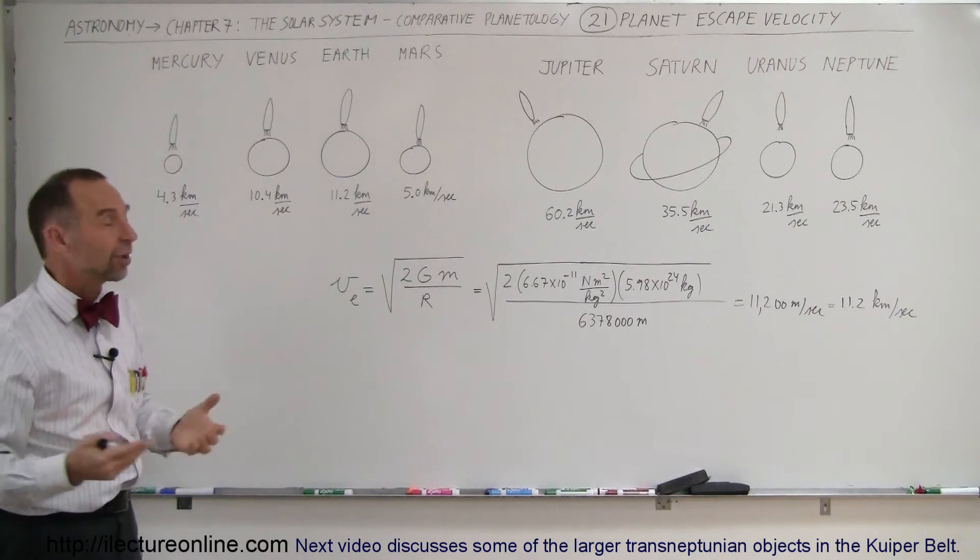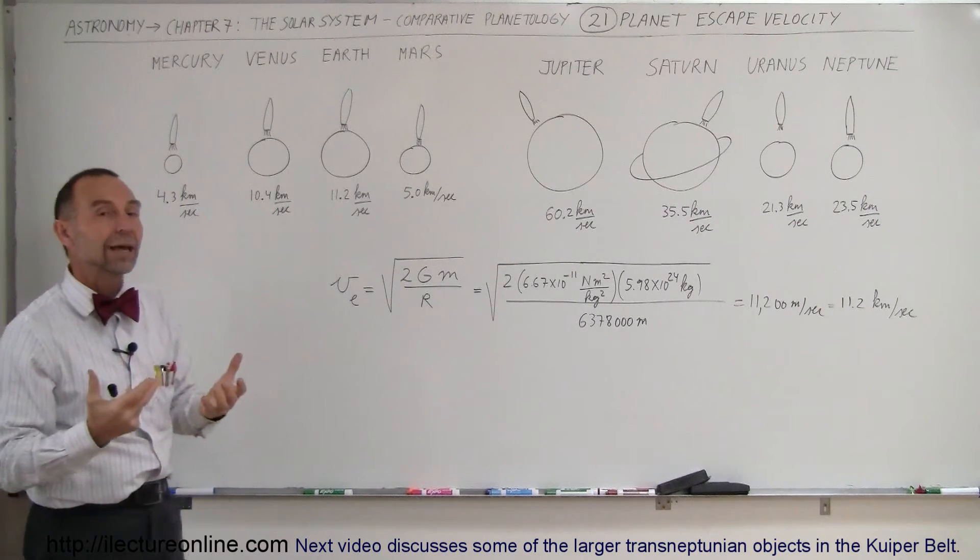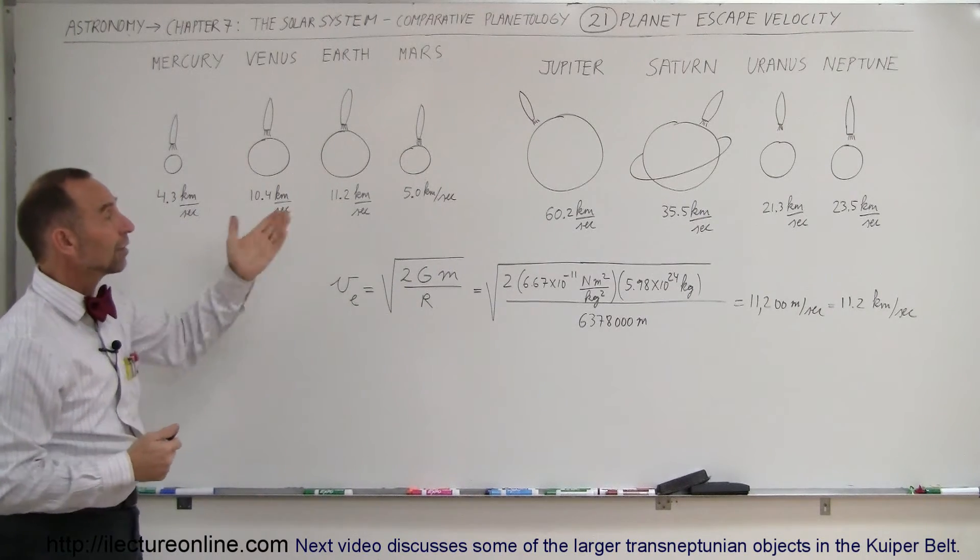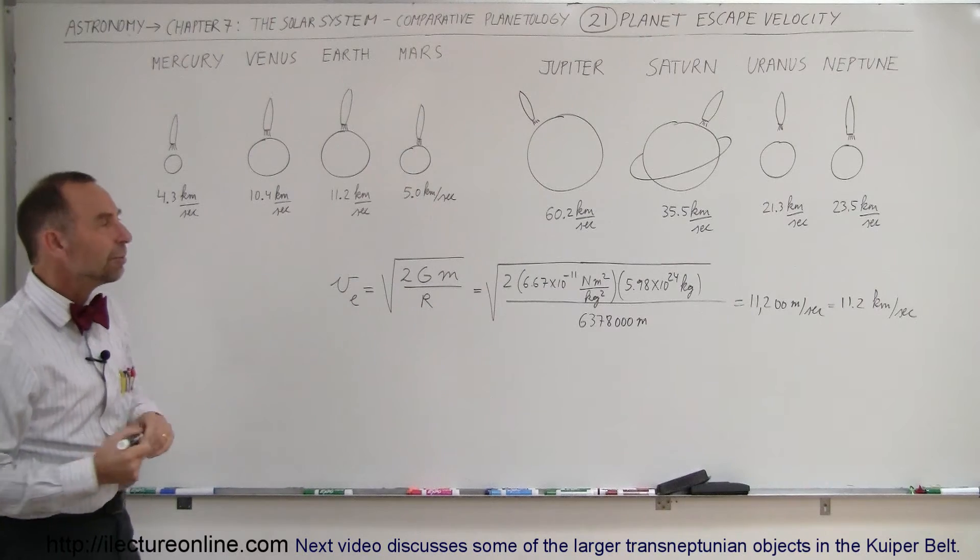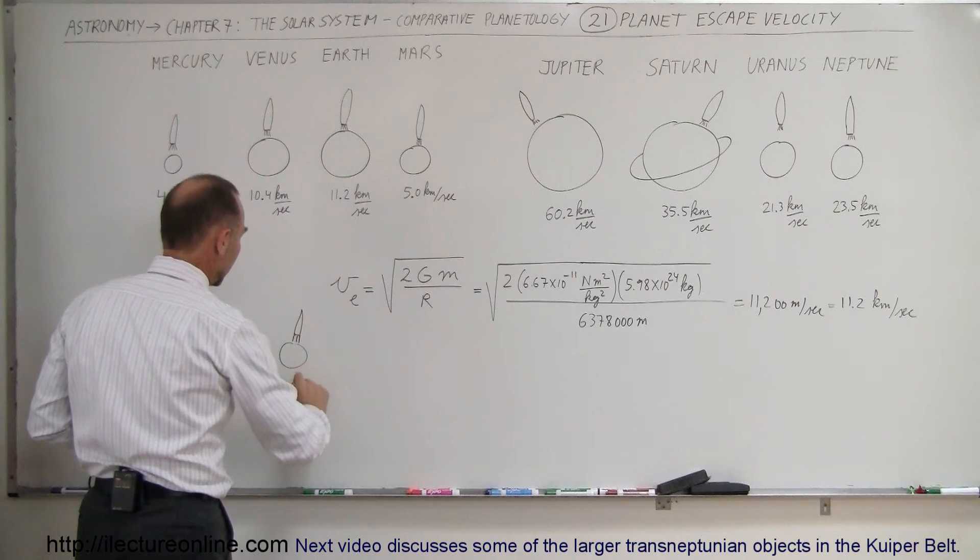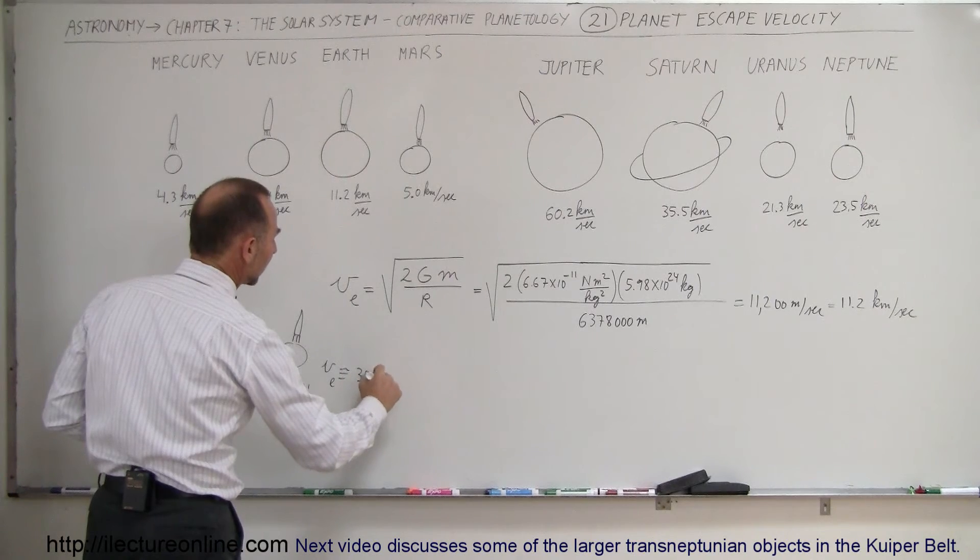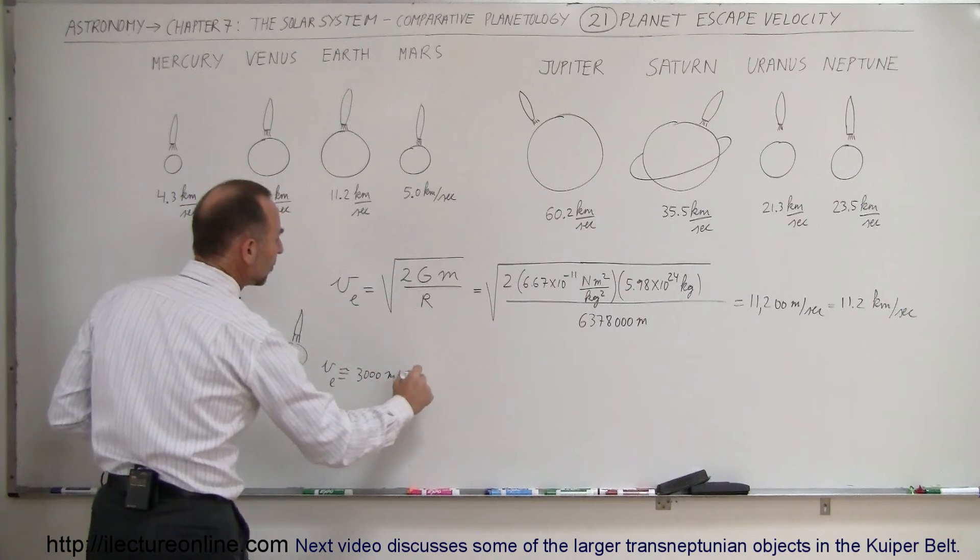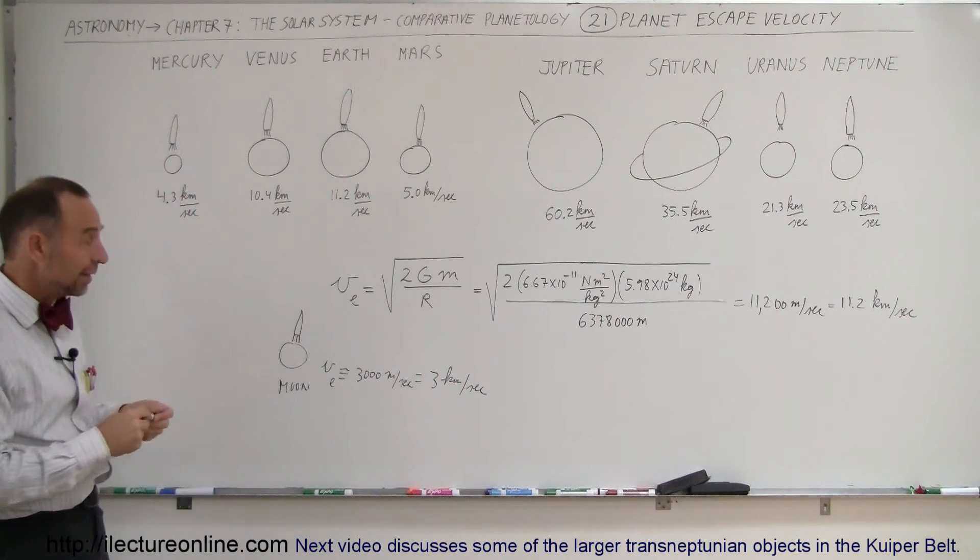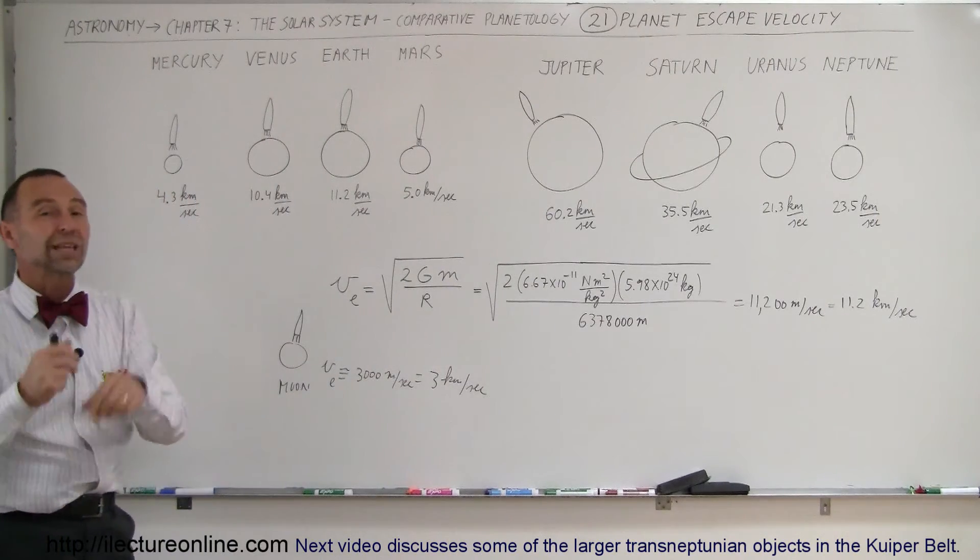Of course, a heavier object will require a larger escape velocity to get away from it. And there you get another overview, another look at what it would take to get away from a planet, if you were to fire a rocket and get away. For the Moon, in comparison, the escape velocity of the Moon is about equal to about 3,000 meters per second, which means it's about 3 kilometers per second. So those astronauts that went to the Moon and landed on the Moon, their space vehicle had to reach speeds of at least 3 kilometers per second in order to get away.